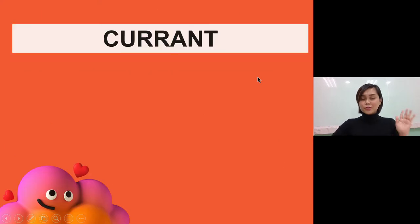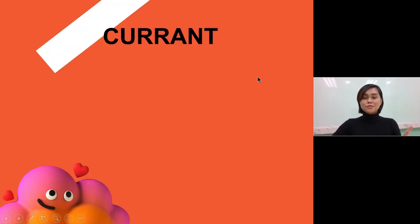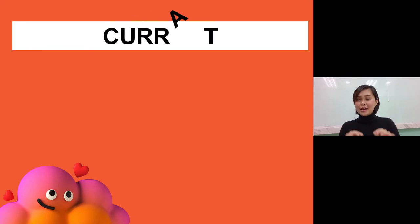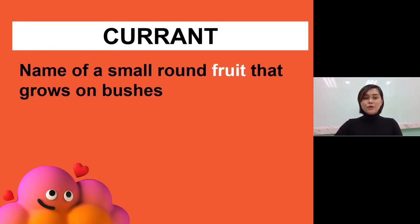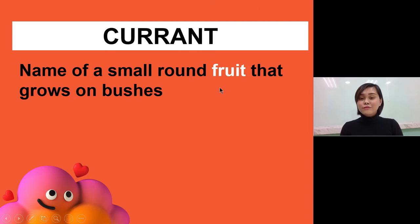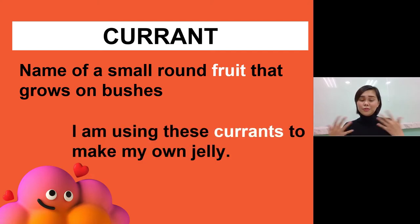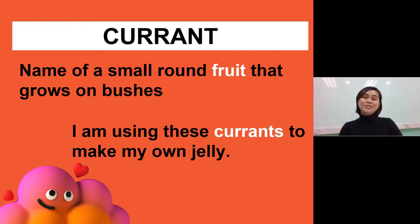Let's discuss the first word 'currant,' which is spelled C-U-R-R-A-N-T. This word refers to a small round fruit — it's the name of a small round fruit that grows in bushes. If I use this in a sentence, I can say: I am using these currants to make my own jelly.